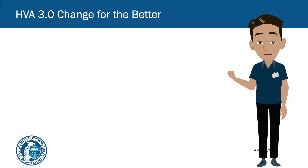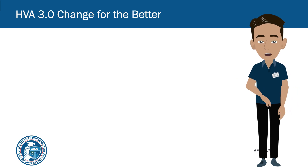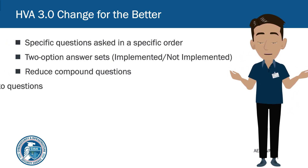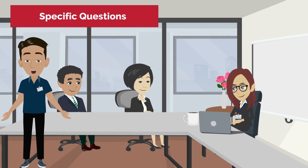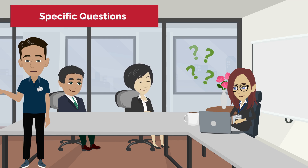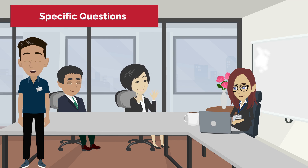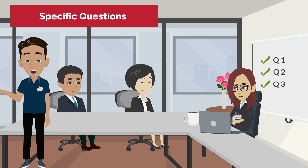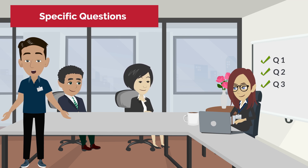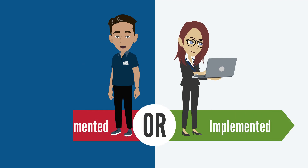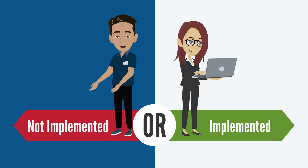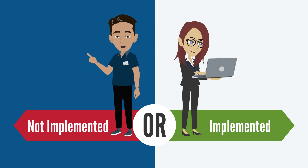HVA 3.0 incorporates several changes from the 2.0 format. The first change is that the assessment now consists of specific questions. Assessors may choose to ask them directly or use a more conversational style, but must come away with clear answers to each question and document all of them. This provides a roadmap for newer assessors and helps experienced assessors track information obtained and questions still needing to be asked. The second change is that answers are recorded in a binary format — either implemented or not implemented — allowing the assessor to clearly document and justify how a capability is or is not being performed. The assessor still takes notes to explain the activity being performed to facilitate report creation.